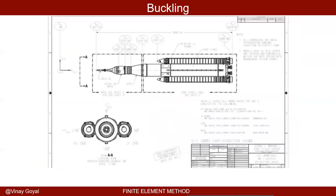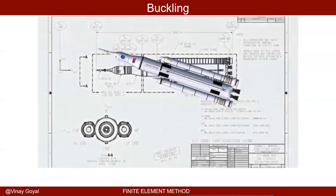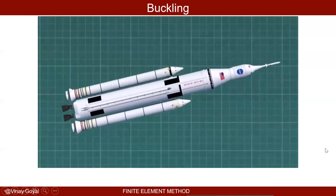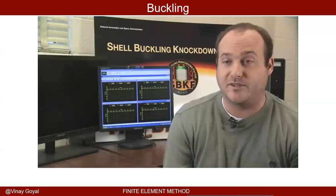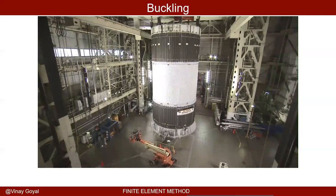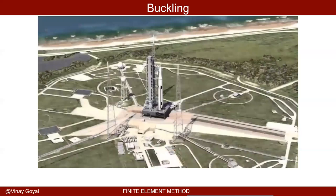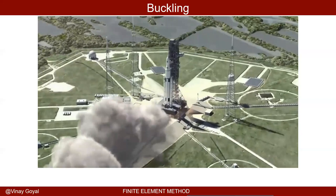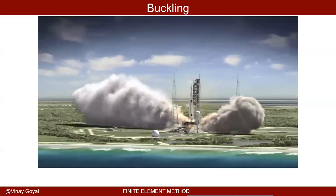The Space Launch System consists of five major components: the forge skirt, the liquid oxygen tank, the hydrogen tank, the inner tank, and the engine section. One of the biggest examples of how this test directly affects SLS is that we're learning on real hardware that's the same size as, for example, the forge skirt. The shell buckling test article is the same diameter as the forge skirt and a little bit taller — a real-life test article we're practicing on and providing good data to the NESC.